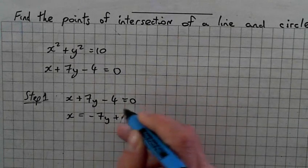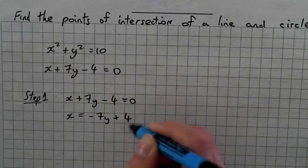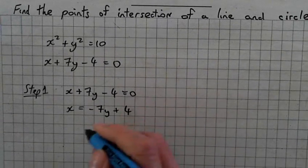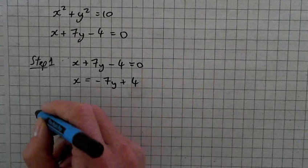Now we're going to insert the line into the circle. This is the rearranged line equation. Into step 2.